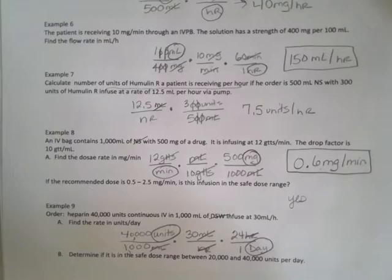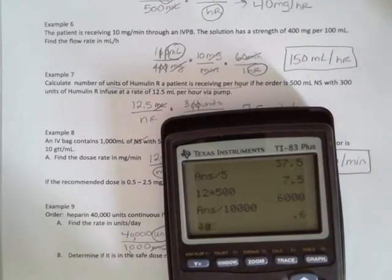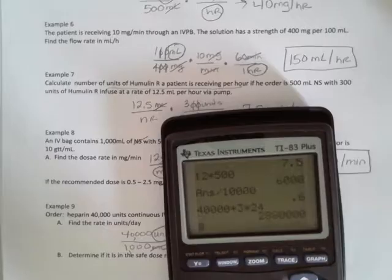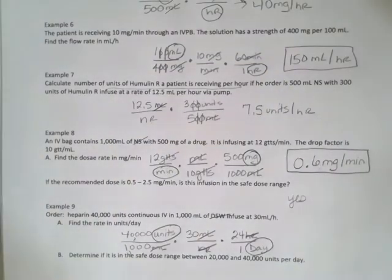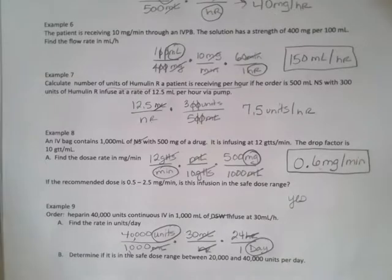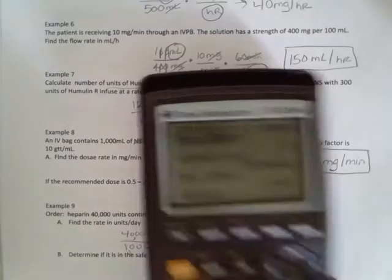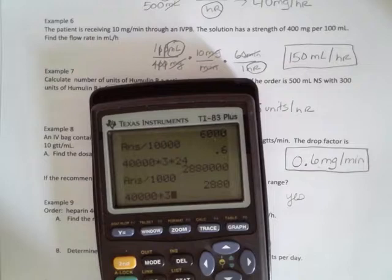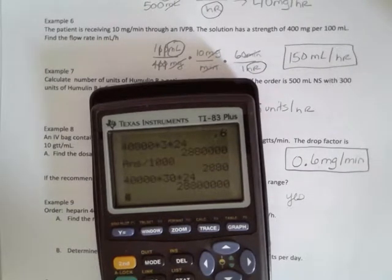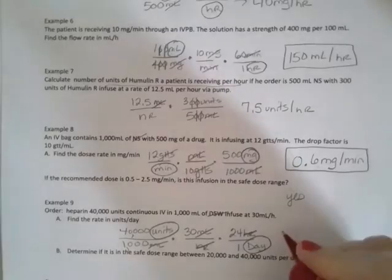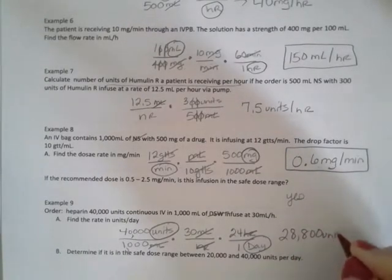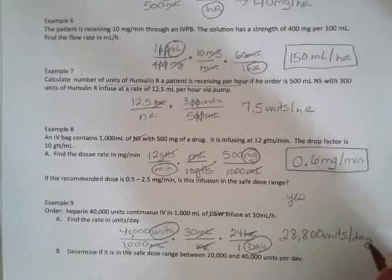So I have 40,000 times 30 times 24, divided by 1000. That's 28,800 units per day of heparin the patient is getting.